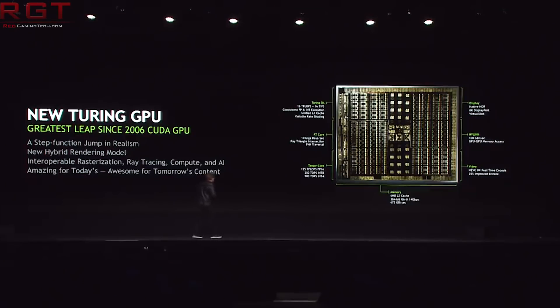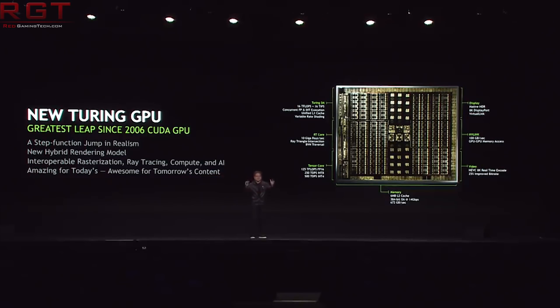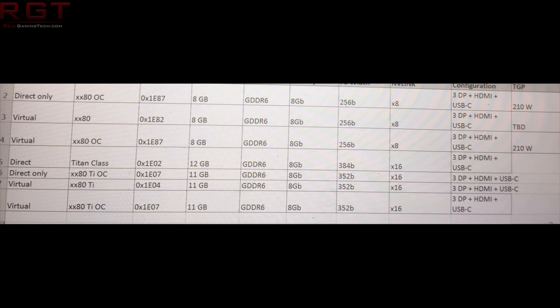These leaks have emerged from both Beidou and TechPowerUp and are rather comprehensive, speaking to not only the release of the RTX 2080 but also a Titan class product as well as the RTX 2080 Ti. The website videocards.com posted a list which appears to be from an AIB, showing various device IDs prefaced with 'direct,' 'only,' or 'virtual.'